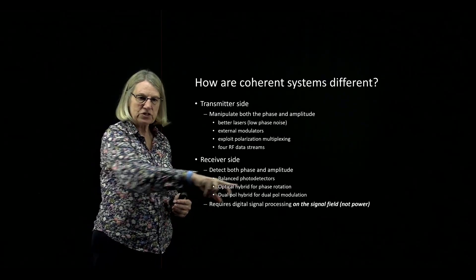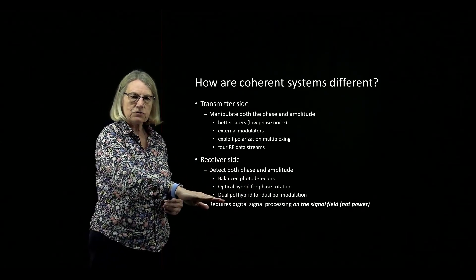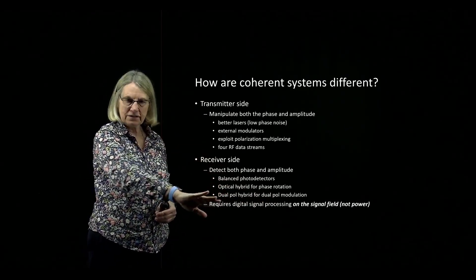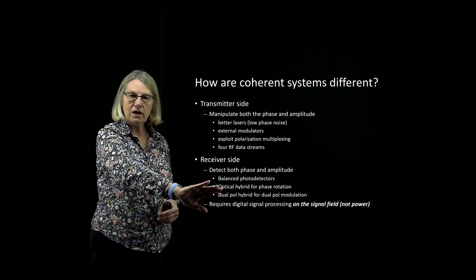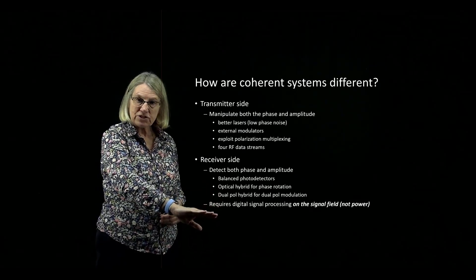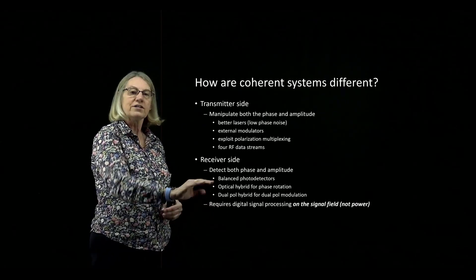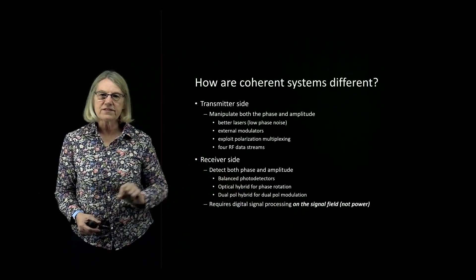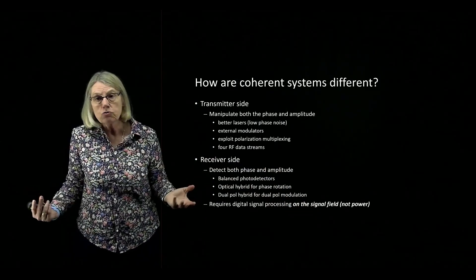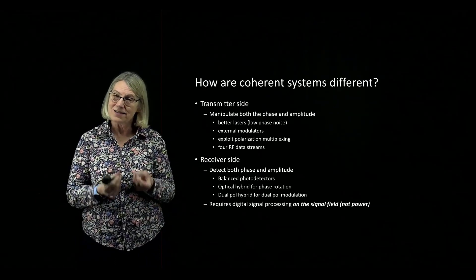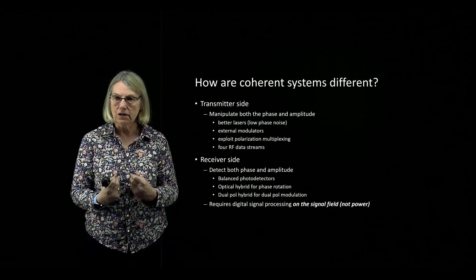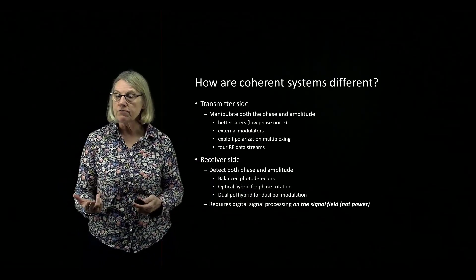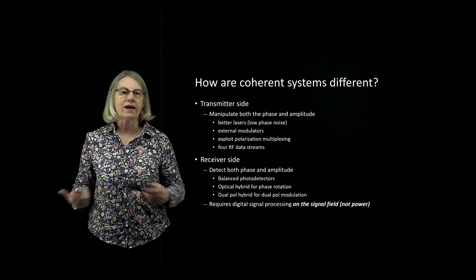I'm going to have to use optical hybrids, which allow me to access the phase, and I'll need dual polarization hybrids if I'm using dual polarization modulation. So there's quite a bit changing on the receiver side instead of having a simple photodetector. I'm also going to require digital signal processing to achieve coherent communications, and that digital processing operates on the signal field — not on the signal power. With IMDD, I can use some DSP, but I only have access to the power of the signal. Having access to the field allows me to use very powerful DSP to combat chromatic dispersion and other impairments.